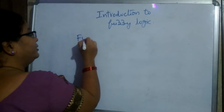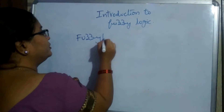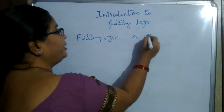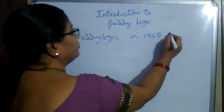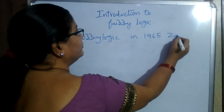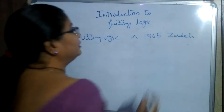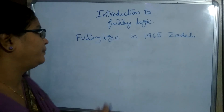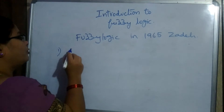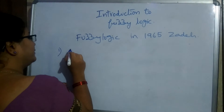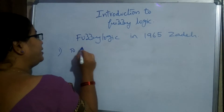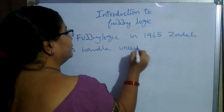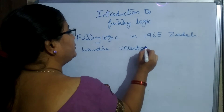Fuzzy logic was introduced in 1965 by the scientist called Zadeh. The main purpose of the invention of fuzzy logic is to handle uncertain situations in artificial intelligence.